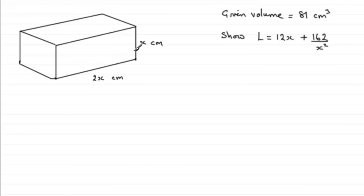We've got this measurement here where this side is x centimeters and this edge is twice that length. We're also told that the volume is 81 centimeter cubes, and we've got to show that the length of all 12 edges totals 12x plus 162 over x squared.